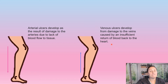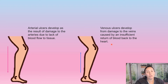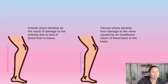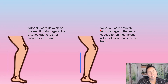Venous ulcers develop from damage to the veins, caused by an insufficiency of blood returning back to the heart. Our venous system brings blood back up to the heart. If blood is coming down but can't get back up, that's when we can get a venous ulcer.